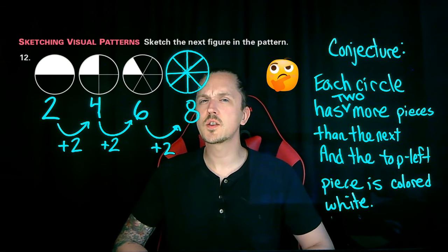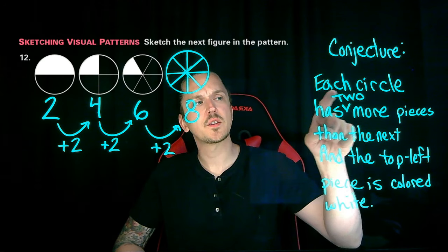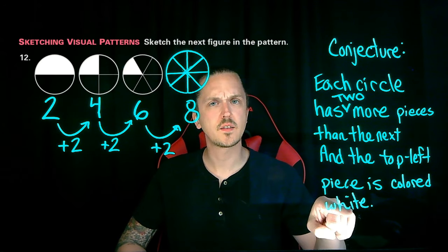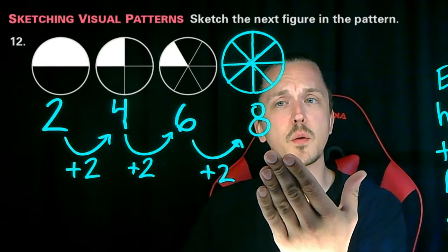Hold up. Now that we made that change, another part of our conjecture is confusing me. What about you? Each circle has two more pieces than the next, and the top left piece is colored white. That's the part that's confusing me now. What is meant by the top left piece in our new figure in the pattern?